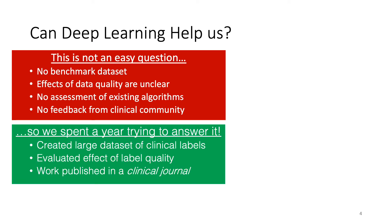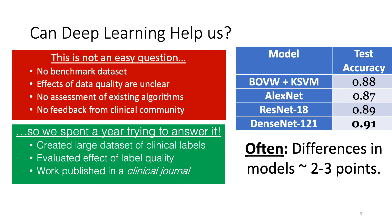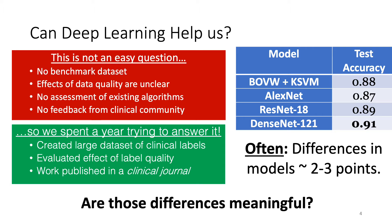Jared spent a year trying to answer this question. He created a large dataset of clinical labels, evaluated the effect of label quality, and published the work in a clinical journal. One result from his work: for deep learning aficionados, the last model is DenseNet — CVPR best paper in 2017, an all-around great model. It does the best. The model at the top is the Bag of Visual Features model with an SVM, which you could have comfortably trained a decade ago. The interesting thing is that the difference is only a few points. So a natural question is: are those differences meaningful? Well, maybe, but also maybe not.